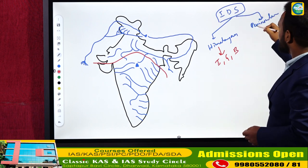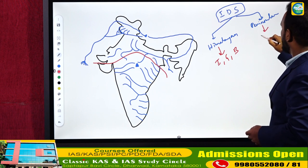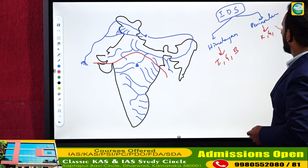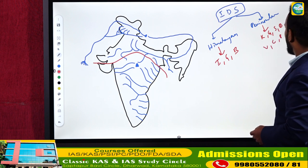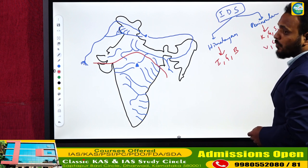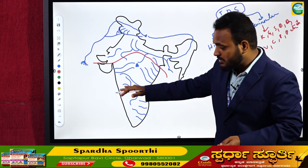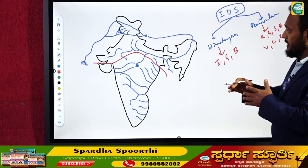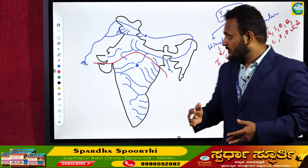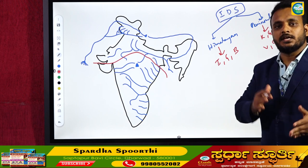Peninsula rivers include Krishna, Godavari, Subarnarekha, Brahmani, Baitarni, Vaigai, Kaveri, Pennar, Palar, and so on. The rivers present in the Peninsula are written here. This is how we classify the river systems of India into two: Himalayan rivers and Peninsula rivers.